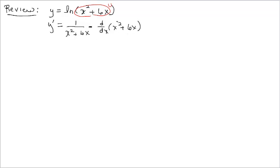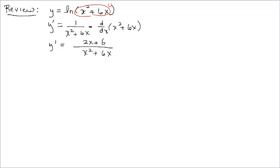So 1 over u times u prime — I'll go ahead and build my fraction, putting the derivative in the numerator. Unless there's a common factor, I'm finished. I can factor the numerator and pull out a 2, leaving x plus 3. In the denominator, pulling out an x gives x times x plus 6. Nothing cancels, so this is the derivative. The log rule for differentiation is 1 over u times u prime. For further examples, check Sophia video F.